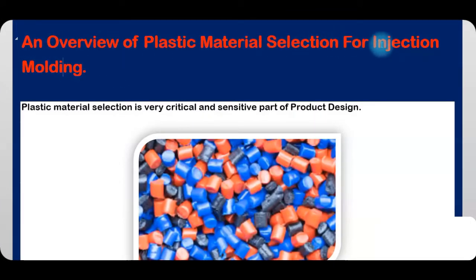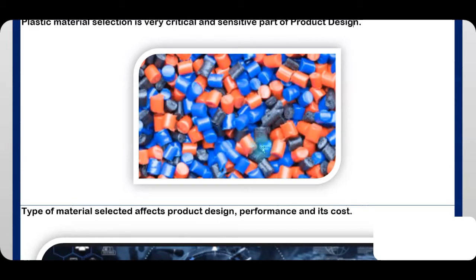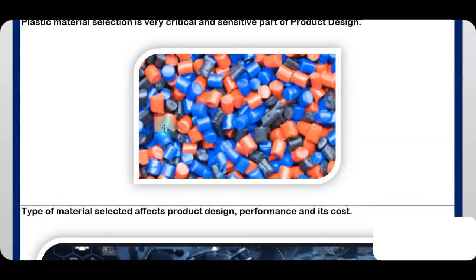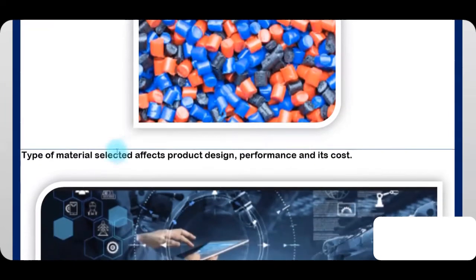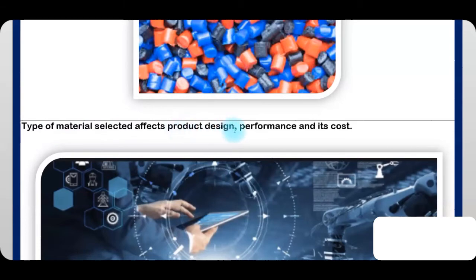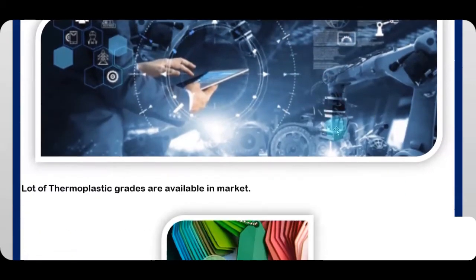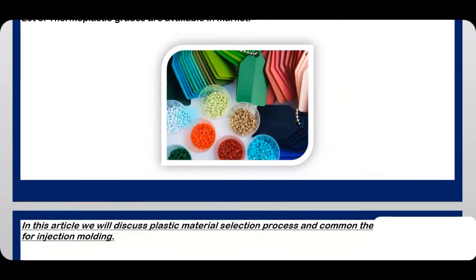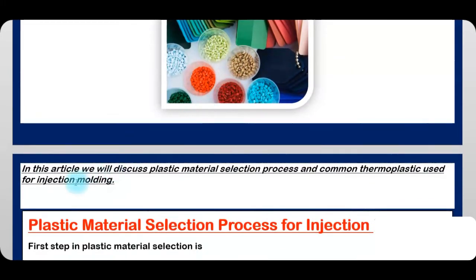An overview of plastic material selection for injection molding. Plastic material selection is a very critical and sensitive part of product design. These are plastic granules in red, blue, and black, mainly made up of some kind of polymer from crude oil and other mixtures of plastic and chemical content. The type of material selected affects product design, performance, and cost significantly. A lot of thermoplastic grades are available in the market for selection.